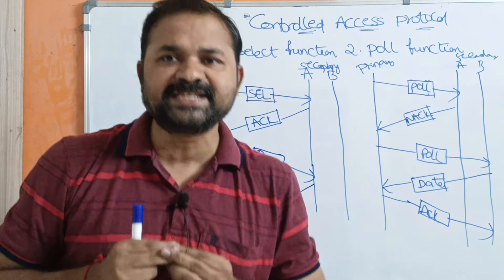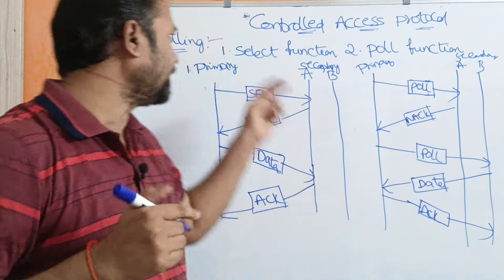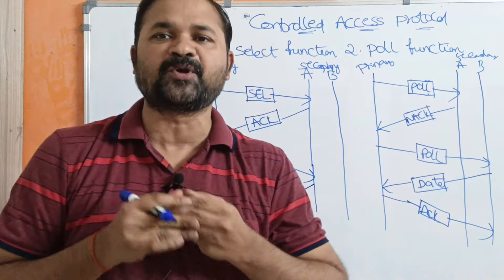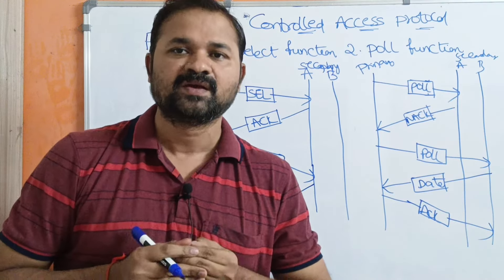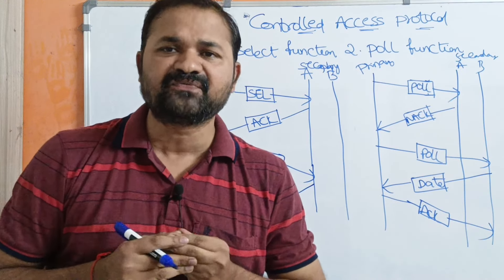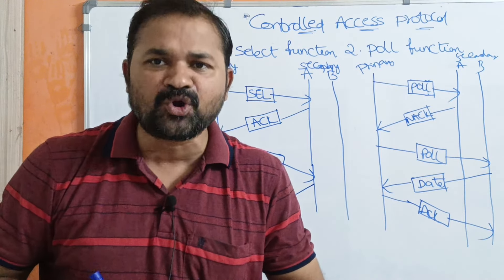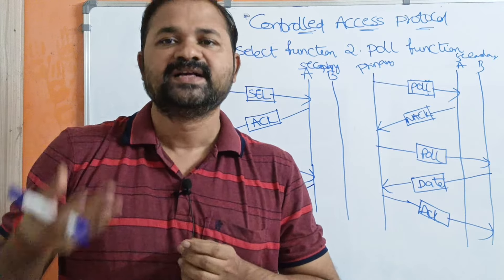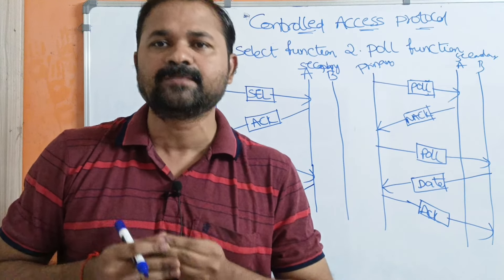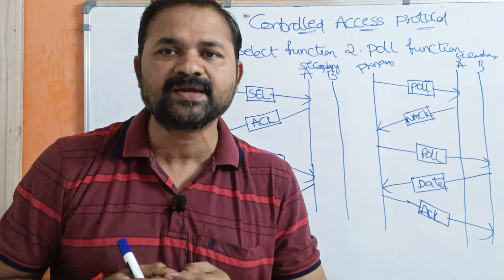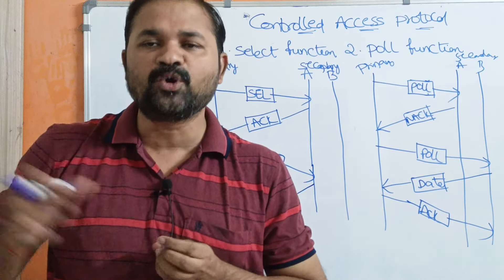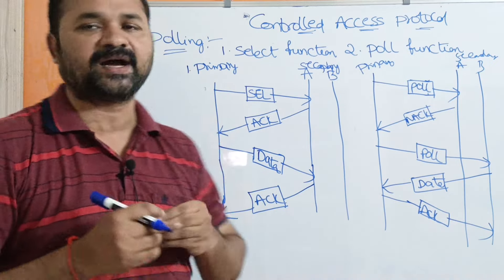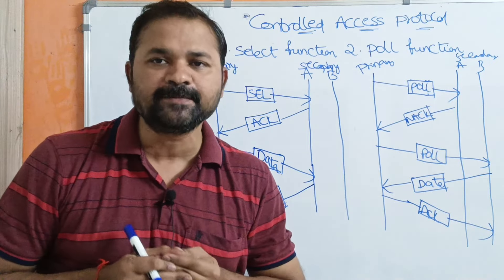Now let us discuss about controlled access protocols. We have three controlled access protocols: reservation, polling, and token passing. Now let us discuss about polling.